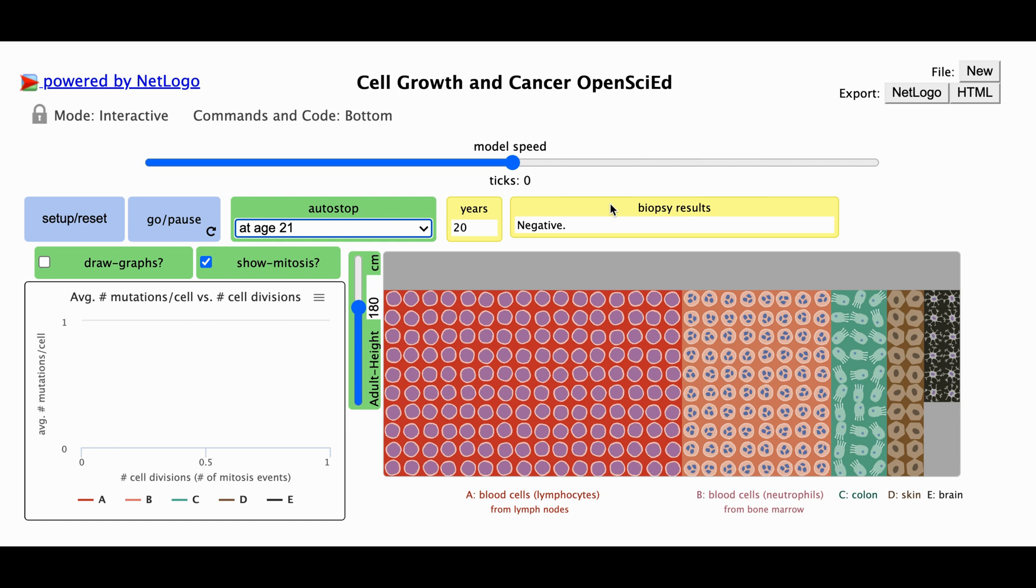To the far left of the cells, there's a graph feature that will automatically graph the number of cell divisions and the average number of mutations per cell while the simulation runs.